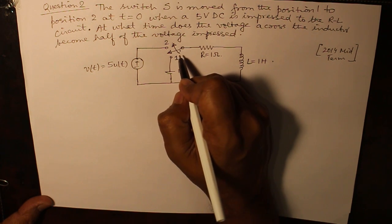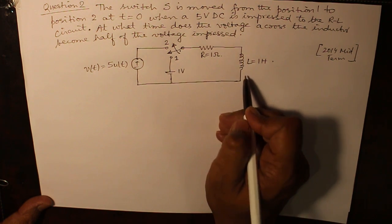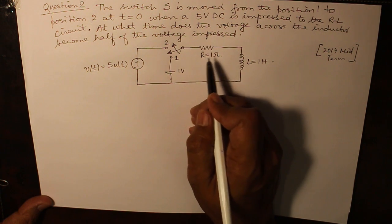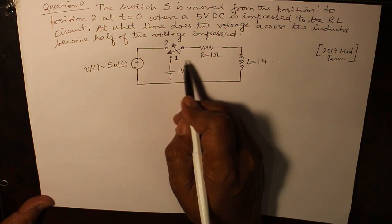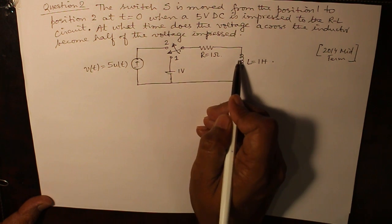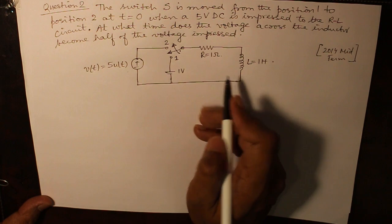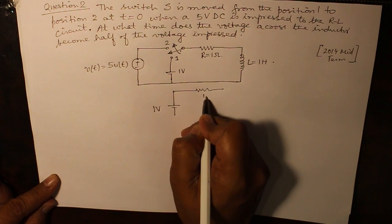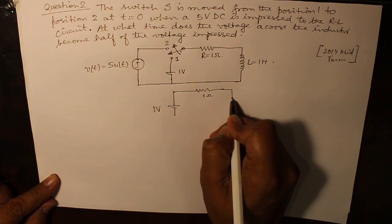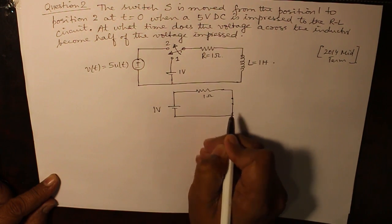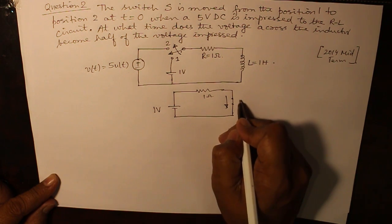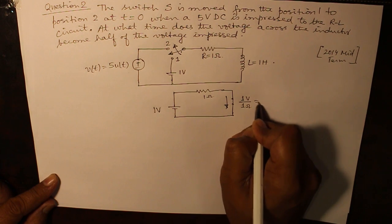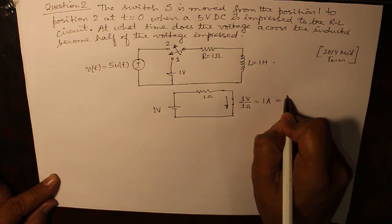Now in all such questions first of all you need to find out what is the initial current in the inductor when it was at position 1 for a very long time. As you know under steady state for a DC supply the inductor behaves as a short circuit. Therefore when you had 1 volt source, a resistance of 1 ohm, and the inductor was behaving as a short circuit, then the current flowing through the inductor was equal to 1 ampere. This becomes I0.